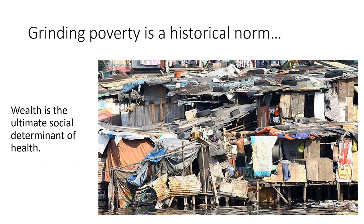Last lecture we talked about social determinants of health — the context in which we're living, and how that helps determine the choice set and capabilities we have to make health behavior choices, such as eating healthier or getting exercise. If you're living in grinding poverty, the last thing you're really worried about is whether you have too much fat in your diet or whether you're getting enough exercise. You're worried about whether you're safe, whether you can get enough food, whether there will be a cholera outbreak, and whether your children are going to survive.